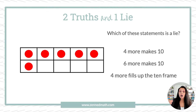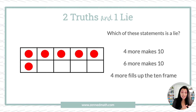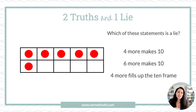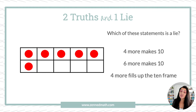The statements are: 'four more makes 10,' 'six more makes 10,' and 'four more fills up the 10 frame.' Looking at the 10 frame, you can probably see some misconceptions — there are six counters, so a student might confuse that. 'Four more fills up the 10 frame' is different from 'four more makes 10.' Obviously the lie here is 'six more makes 10,' because six plus six equals 12, not 10.